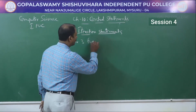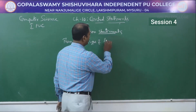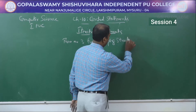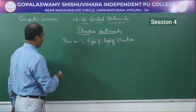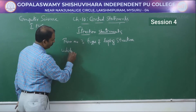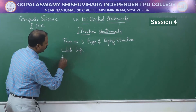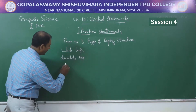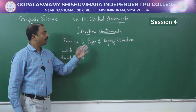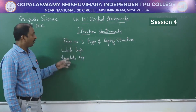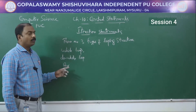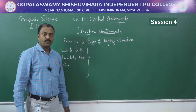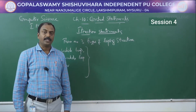There are three types of looping structures. One is While Loop, Do While Loop, and For Loop. All these structures are used for repetition of statements until some condition is satisfied.